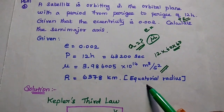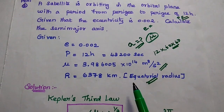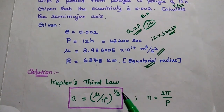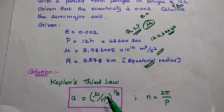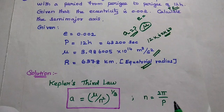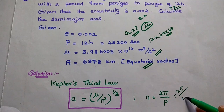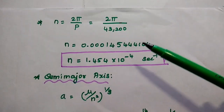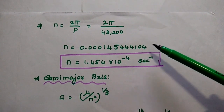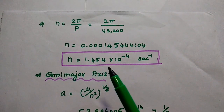We also consider the equatorial radius as 6378 km for the earth radius. Then we are going to find out the semi-major axis. According to Kepler's third law, semi-major axis A is equal to (mu divided by n squared) to the power 1 by 3, where n is the mean motion equal to 2 pi divided by P. Substituting P equal to 43,200 seconds, we can get n equal to 1.454 times 10 to the power minus 4 per second.